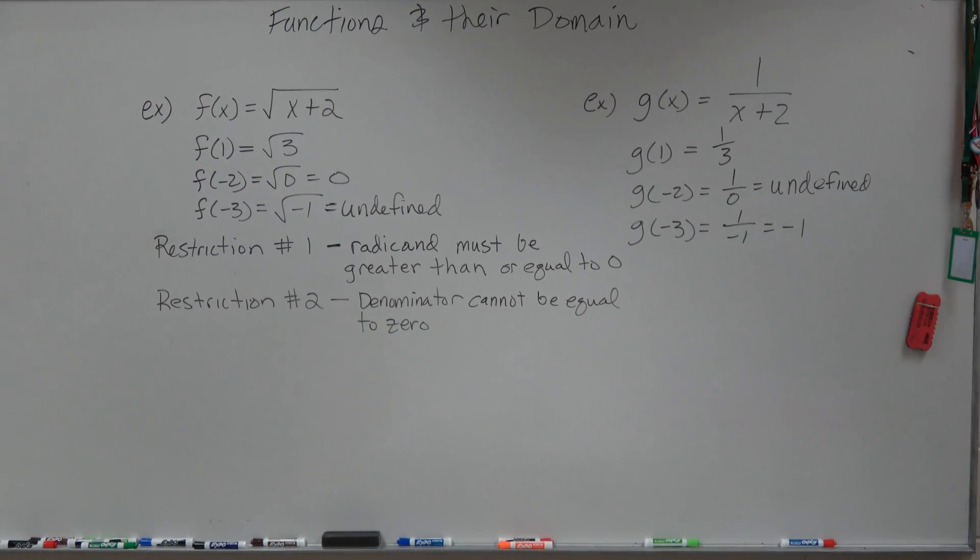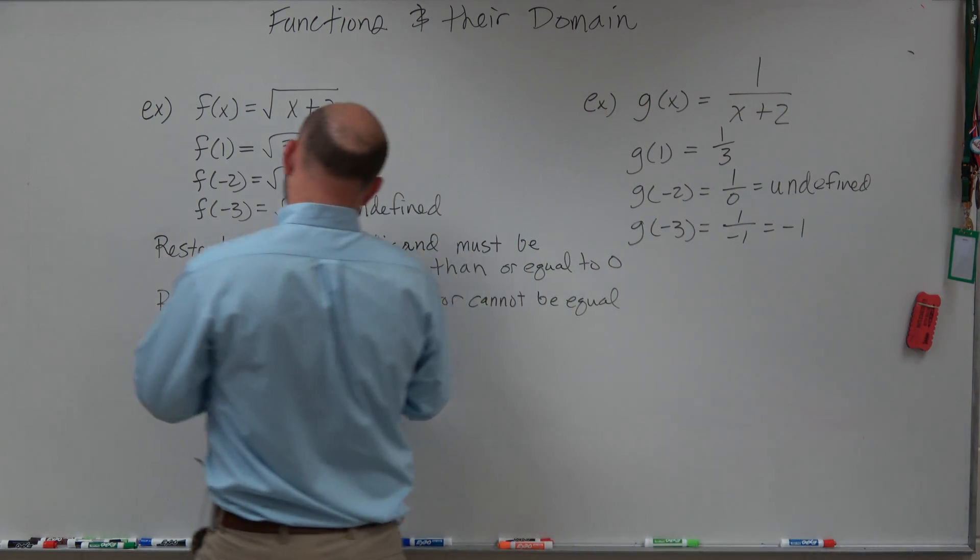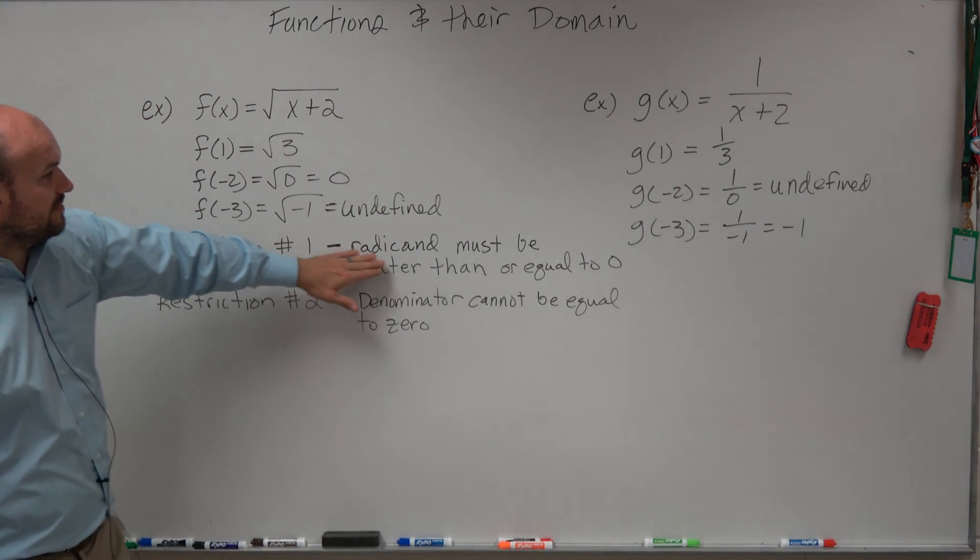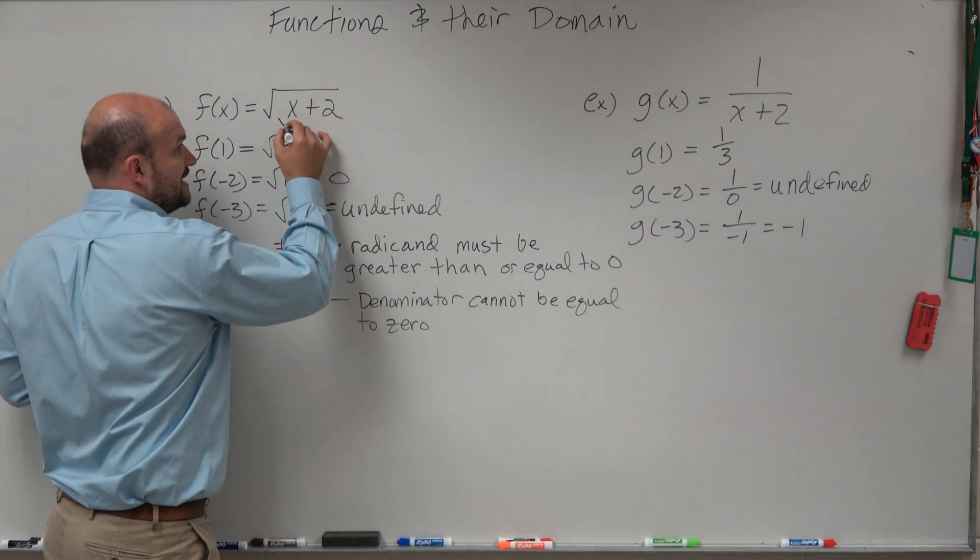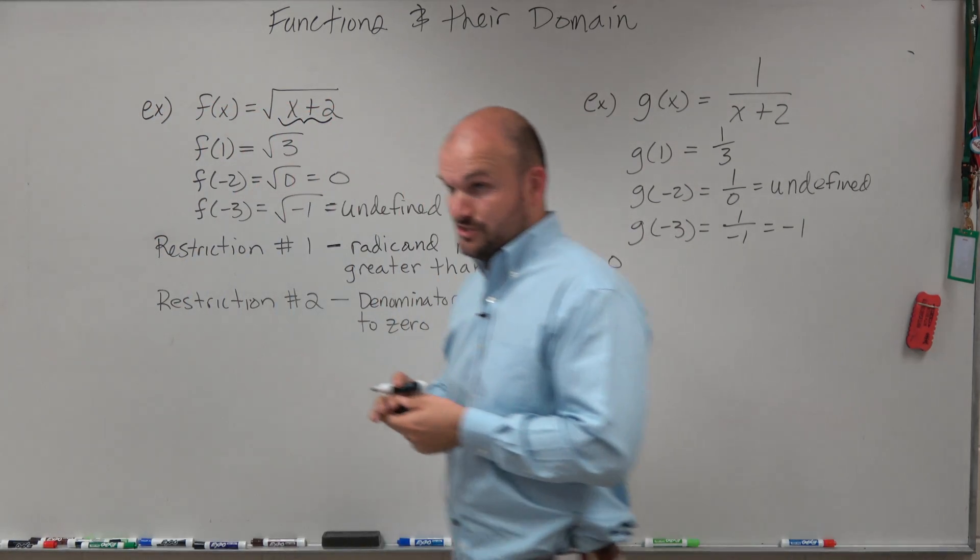Okay, so in this first example, guys, you're looking at this. Here's your function. We know that in this function, our radicand must be greater than or equal to 0. Now, what is our radicand in this example? Radicand is what's under the radical, which is x plus 2.